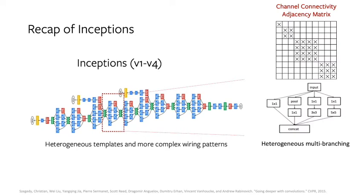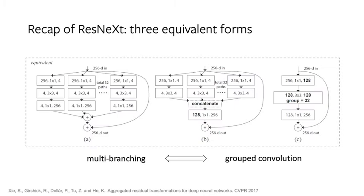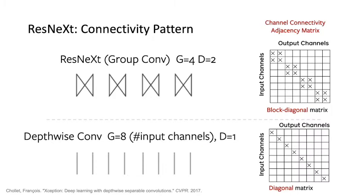Later on, there are more complex varying patterns such as GoogleNet, where the key structure is the heterogeneous multi-branching. ResNeXt further modularized the design and uses homogeneous multi-branching, which can be efficiently implemented by grouped convolution. Using the same graph adjacency matrix representation, we can see that ResNeXt represents a graph structure where the adjacency matrix is a block diagonal matrix. It is a flexible structure, and actually depth-wise convolution is one of the special cases where the adjacency matrix is strictly diagonal.